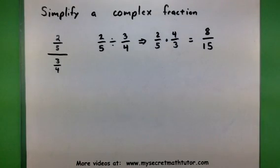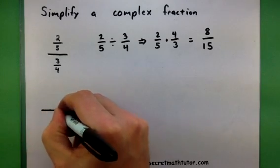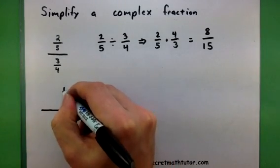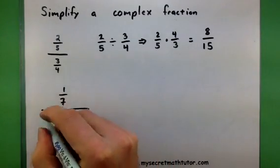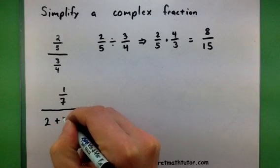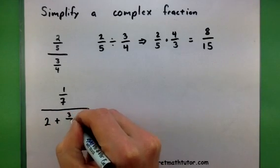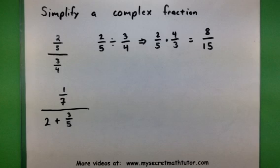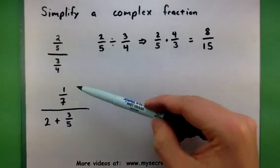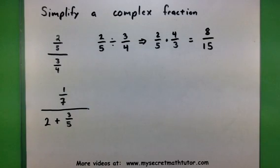Alright? Let's go ahead and give this another try. Alright. Now, here's an example of a complex fraction because, again, I have a fraction living in the numerator and another fraction somewhere in the denominator.